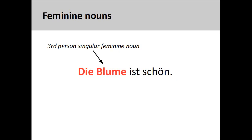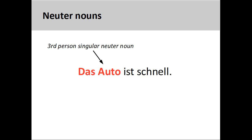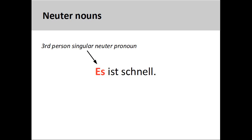Or the feminine noun Blume, in die Blume ist schön, the flower is beautiful, can be replaced by the third person singular feminine personal pronoun, sie, she. And the neuter noun Auto, in das Auto ist schnell, the car is fast, can be replaced by the third person singular neuter personal pronoun, es, it. The main point is to pay close attention to the grammatical gender of the noun when replacing it with a pronoun.